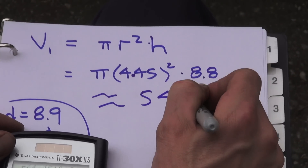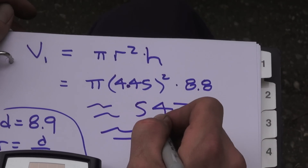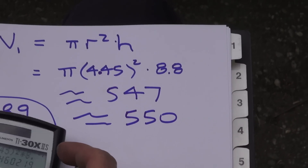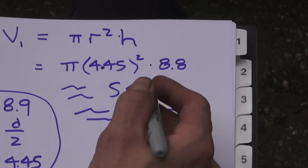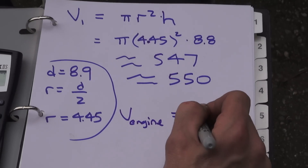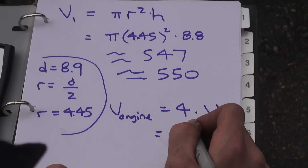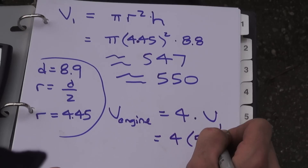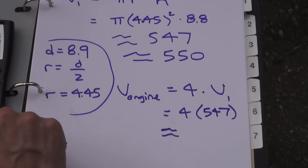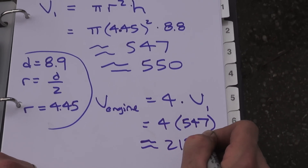On the calculator, punching in 4.45 squared times 8.8 times π gives us roughly 547 cubic centimeters. These numbers are approximate because of our measurements, so the best estimate is about 550, but either way we have to multiply by four, because that's the volume of just one cylinder. The volume of the entire engine is four times that.